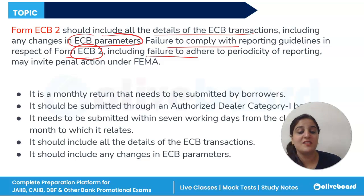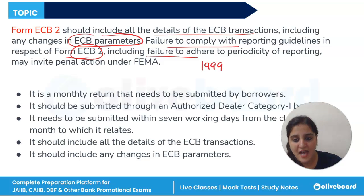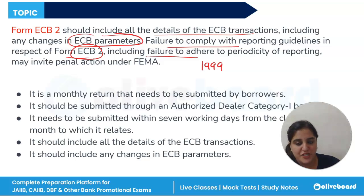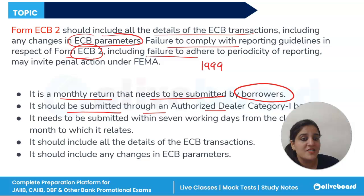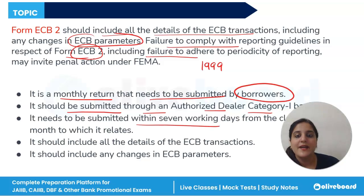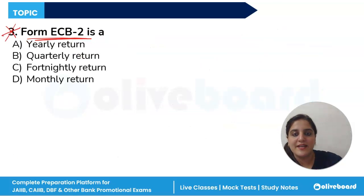FEMA — the Foreign Exchange Management Act — is legislation in India that regulates foreign exchange transactions, enacted in 1999 to replace the Foreign Exchange Regulation Act 1973. Its primary objective is to promote orderly development and maintenance of the foreign exchange market in India and to facilitate external trade and payments. Form ECB2 is a monthly return submitted through an authorized dealer Category I bank, within seven working days from the close of the month. The correct answer is option D — Form ECB2 is a monthly return.